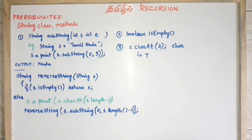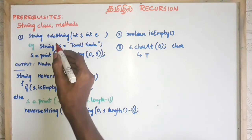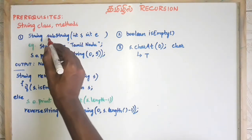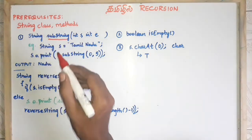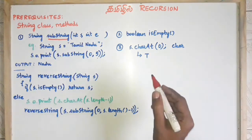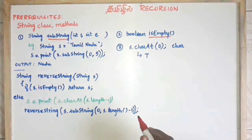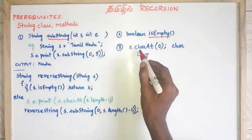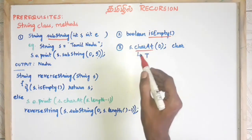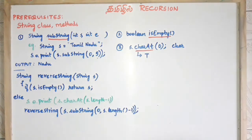We can see the methods in the string class. We are going to cover three methods: the substring method, the isEmpty method, and the charAt method.